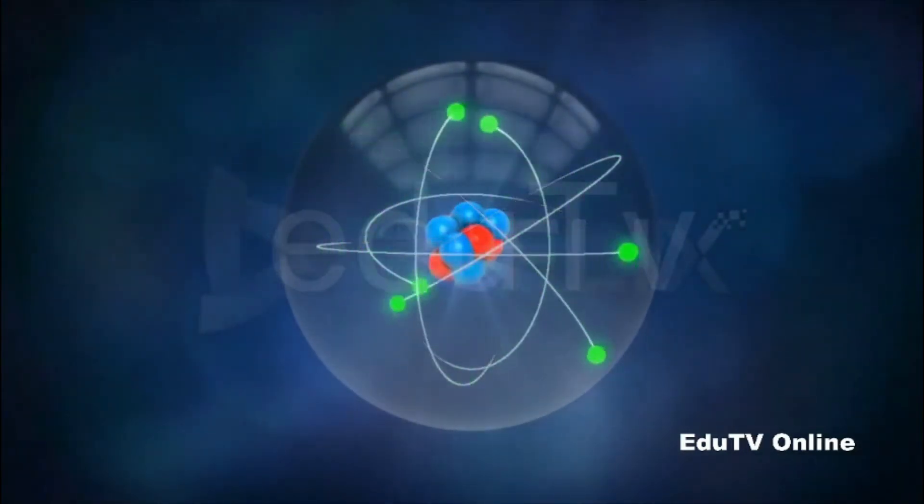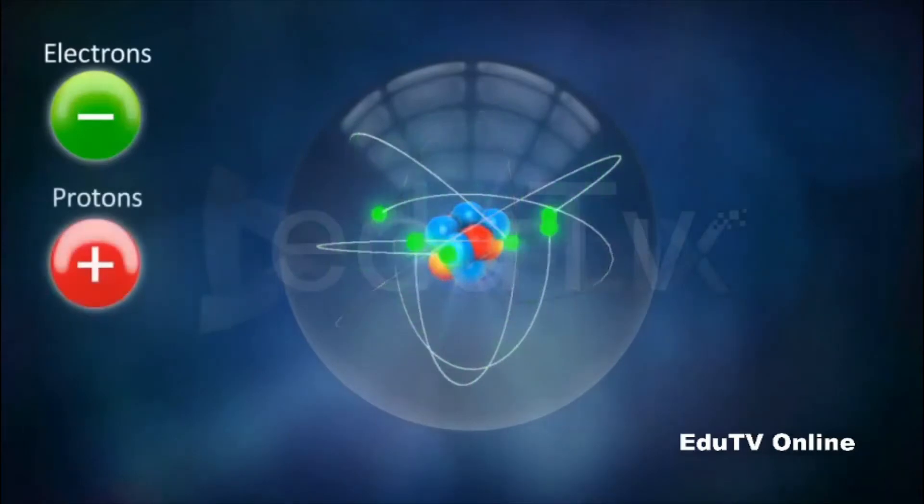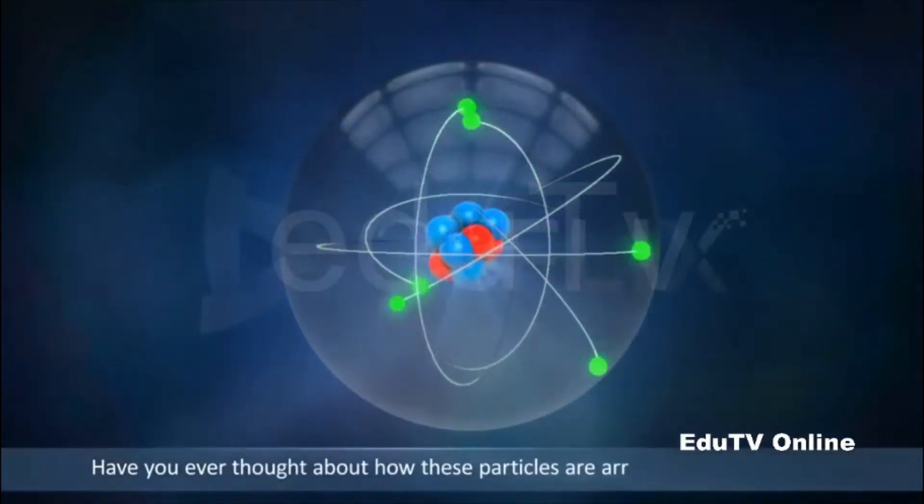By now, we know that an atom is made up of subatomic particles, that is, electrons, protons and neutrons.